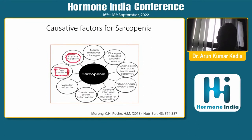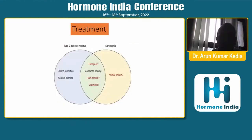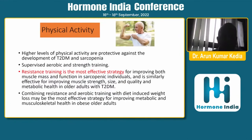The two most important causative factors for sarcopenia are decreased physical activity and poor nutrition. For treatment, we can have caloric restriction to decrease obesity, along with exercise training — both resistance training and aerobic exercise. Resistance training is the most effective strategy, improving muscle strength, size, and quality. Combining resistance exercise with aerobic training provides dual benefit: aerobic training improves metabolic health, while resistance exercise improves musculoskeletal health. For diabetic patients who are obese, we must combine both.